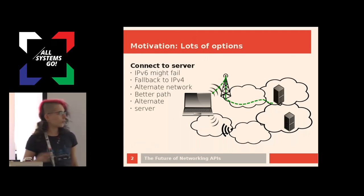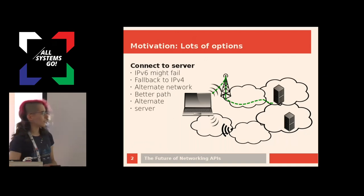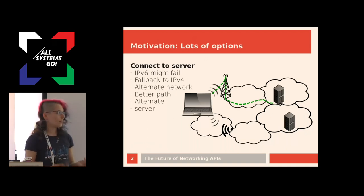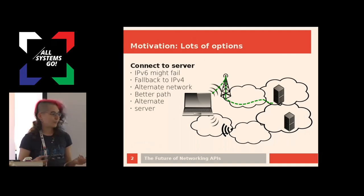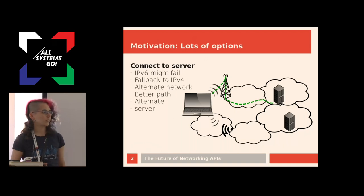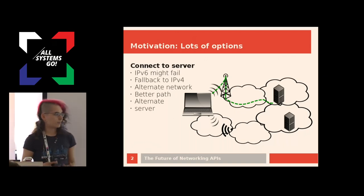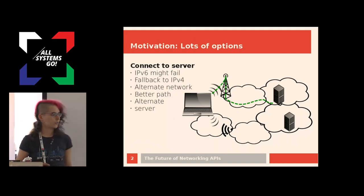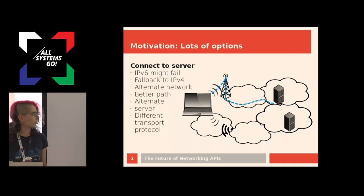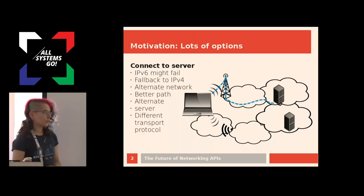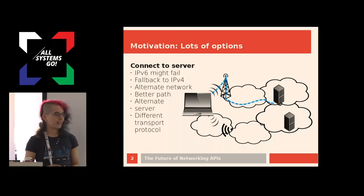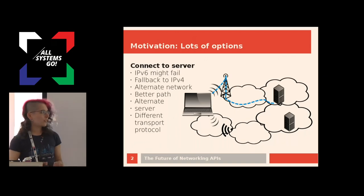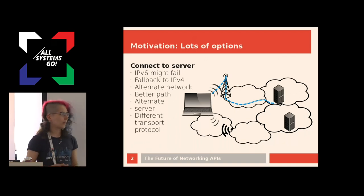There might also be an alternate server over this other path, because we could resolve the same name on different networks, and then maybe we get different answers based on which network we actually resolve the name on. We have to pick which of those remote IP addresses we actually connect to. Maybe we want to speak a different transport protocol, because TCP is nice, but nowadays also QUIC. And we don't really know beforehand which one will be available; we could try out both.